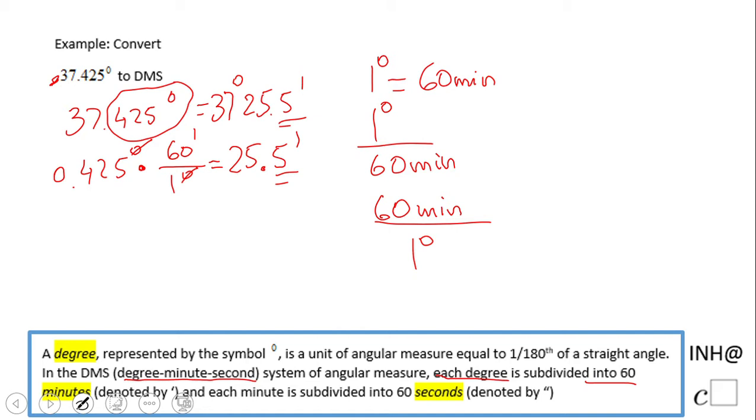We look at another conversion: 1 minute equals 60 seconds. The conversion fraction is 60 seconds over 1 minute, or its reciprocal, depending on what you need.